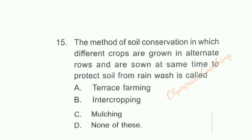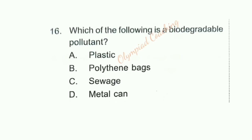Question number 15: The method of soil conservation in which different crops are grown in alternate rows and sown at the same time to protect soil from rain wash — is called? Option B is correct — This is intercropping. Question number 16: Which of the following is a biodegradable pollutant? Option C is correct — Sewage. Plastic, polythene bags, and metal cans are non-biodegradable.